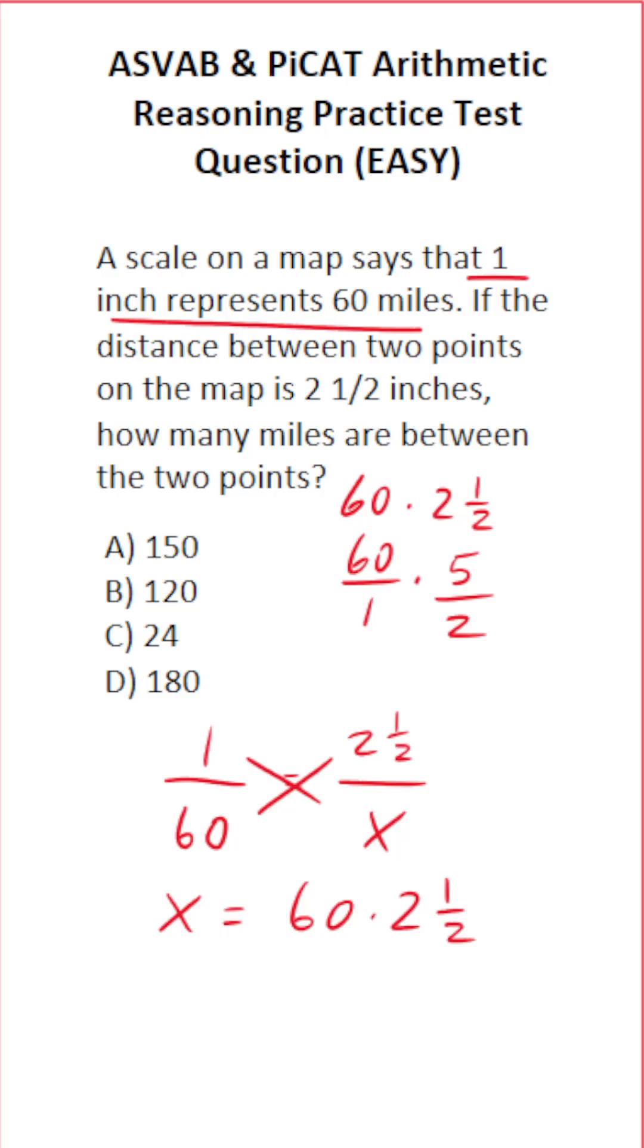Now before we multiply these two fractions together, we can use some cross reduction. Two goes into two one time. Two goes into 60 thirty times. So this is 30 over one, which is just 30, times five over one, which is just five.